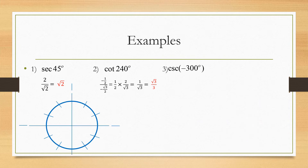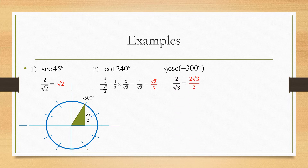Let's do cosecant of negative 300 degrees. Negative means we go clockwise — the opposite of what we normally do. Find where negative 300 degrees is on the unit circle, draw in our triangle. Cosecant is the inverse of sine, and sine is the opposite side, which is radical three over two. Since we're doing cosecant, flip that answer to two over radical three, rationalize by multiplying top and bottom by radical three to get two radical three over three.